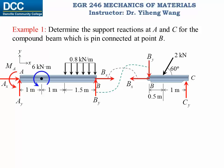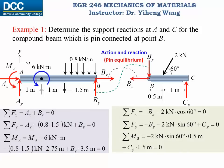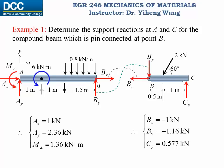Why are these forces of the same magnitude but opposite directions? You can consider them as action and reaction, but more accurately their relations are determined through pin equilibrium of the pin at point B connecting these two members. Now we have two completed free body diagrams — three equations each, so six equations overall and six unknowns. It is probably easier to solve for member BC first, then solve for the remaining reactions on member AB.